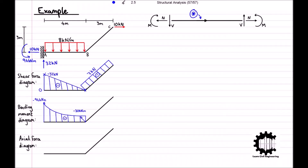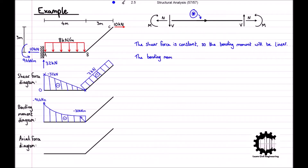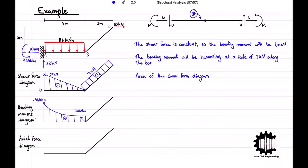The shear force is equal to the derivative of the bending moment, and as the shear force is constant the bending moment is therefore linear. The slope of the bending moment equals the shear force, so it increases at a constant rate of 7 kilonewtons along the entire length of bar BC. As the shear force is constant along the bar, the area below the shear force diagram can be calculated using the formula for the area of a rectangle, where the height is 7 kilonewtons.